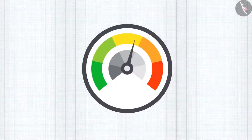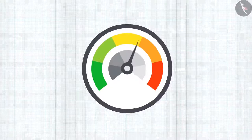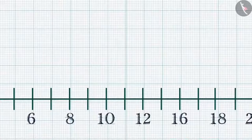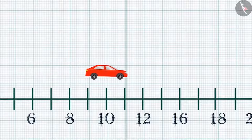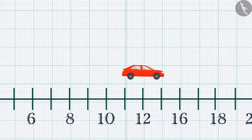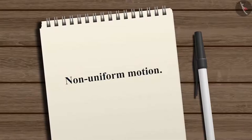But most of the time speed is not constant. It sometimes increases, decreases, or remains constant for equal time intervals — this type of motion is known as non-uniform motion.